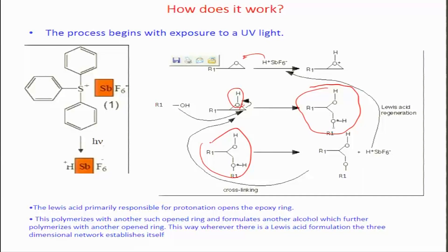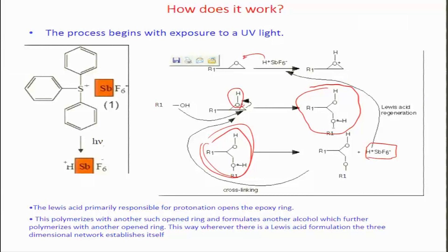The proton may retreat back into the photo acid generator molecule, but what it has essentially done is opened up the rings so that they can cross-link. Such cross-linking is important for the process of lithography — it is a cross-bonding polymerization reaction where multiple organic molecules come together and cross-linking develops between them, enabling them to stay on the surface without the developer solution being able to etch them away. The structures remaining on the surface in a negative tone resist are the ones which are cross-linked in this manner.